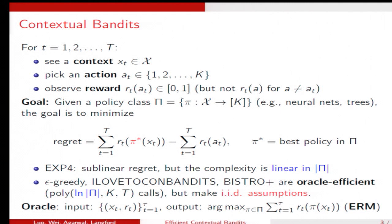The Oracle is an algorithm like this. It inputs some pairs of context and reward vectors and outputs the best mapping in a policy class that has the max reward. This is essentially an empirical minimization problem, and you can use some classification algorithms you like to implement this algorithm.